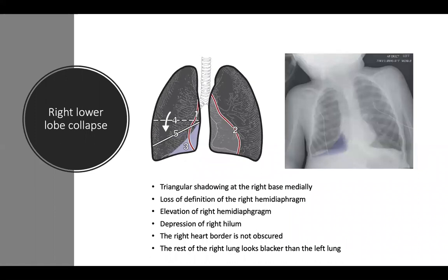That was an example of right lower lobe collapse. Features include triangular shadowing at the right base medially, loss of definition of the right hemidiaphragm, elevation of the right hemidiaphragm, depression of the right hilum, the right heart border is not obscured, and the rest of the right lung looks blacker than the left. The diagram shows: one — right heart border, two — left heart border, three — triangular shadowing, four — normal horizontal fissure, five — horizontal fissure displaced downwards. The radiograph shows the collapsed right lower lobe in purple.